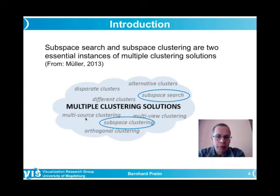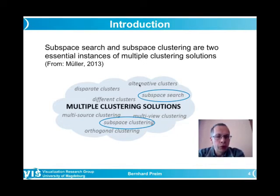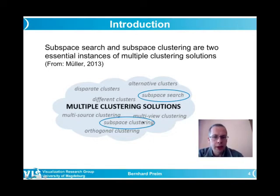Subspace clustering is part of a broader topic called multiple clustering solutions. Last week, alternative clusters were discussed — using global methods with varied parameters to find different valid clusters and make analysts aware of different data interpretations. Today, subspace search and subspace clustering are introduced as two further topics in this area for high-dimensional data.